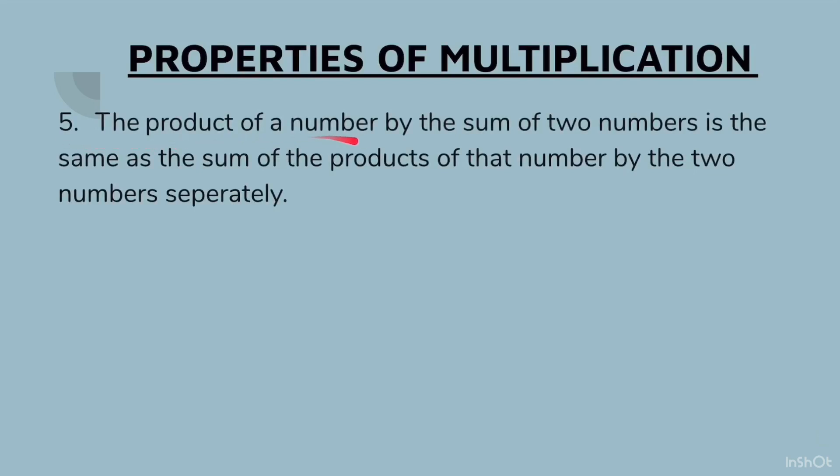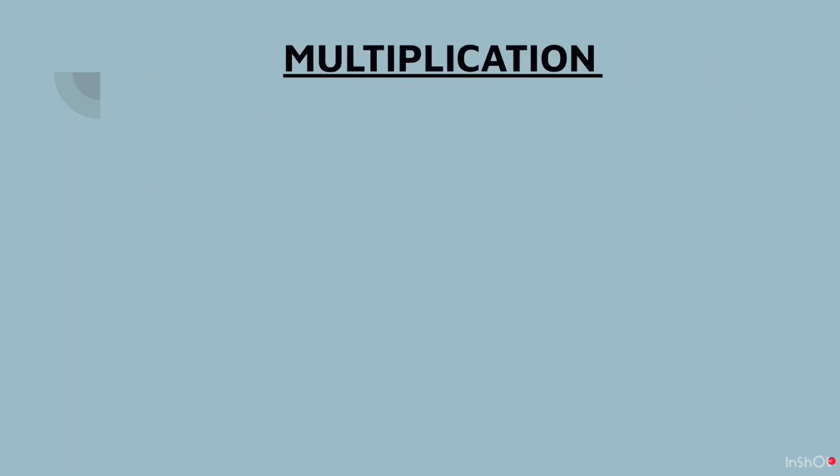The fifth property: the product of a number by the sum of two numbers is the same as the sum of the product of that number by two numbers separately. Now for the understanding of this, let us look at the example. 16 × (35 + 24) is going to be equal to 16 × 35 plus 16 × 24. When we solve the left hand side and the right hand side separately, we will get the exact same answer.